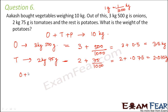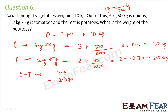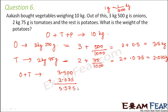Now we find the combined weight of onions and tomatoes: 3.5 plus 2.075. We place the two numbers so their decimal points align exactly, adding a zero where needed. Starting from the rightmost column and adding, the result is 5.575 kg — this is the total weight of onions and tomatoes together.